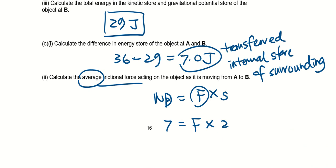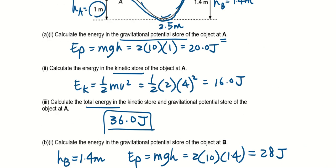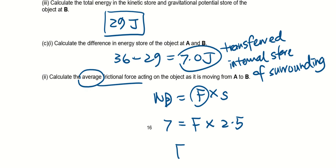So the track is 2.5 meters, I believe, therefore the frictional force is 7 over 2.5. So the answer is 2.8 newtons.